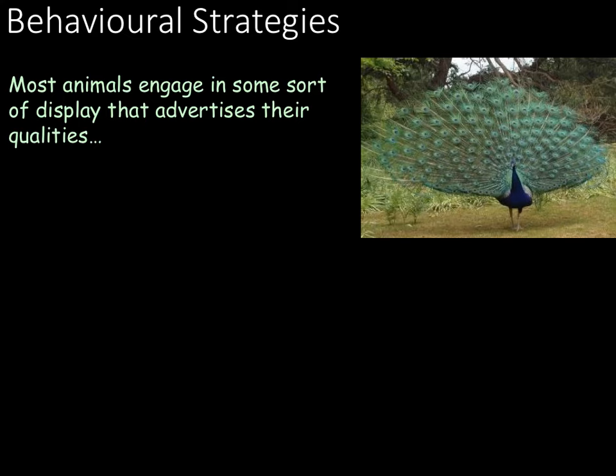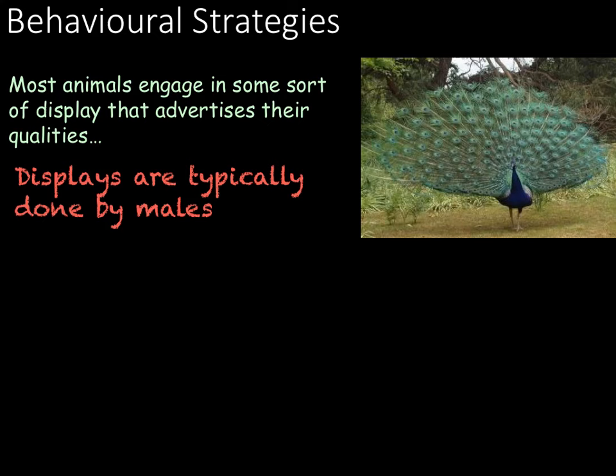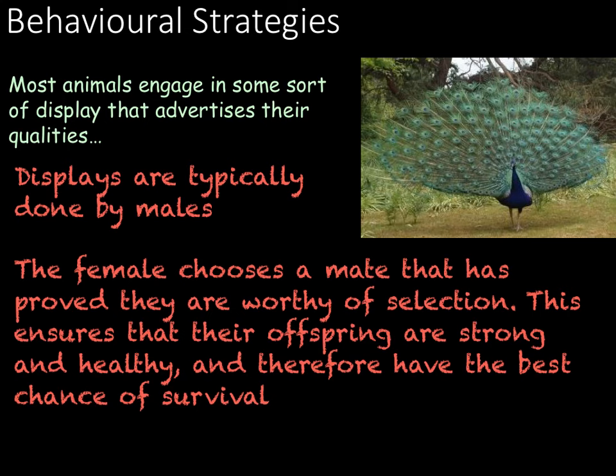As well as having different mating patterns, different animals have different behavioural strategies in order to find a mate. Most animals will engage in some sort of display that advertises their qualities. This is of particular importance to animals that live in isolation, meaning they only spend time with others during the mating season. For example, a peacock will show its feathers as a display to attract a mate. It is typically the male of the species that does this display, and the female will choose the mate that shows he is worthy of selection, ensuring their offspring are strong and healthy with the best possible chance of survival.